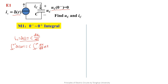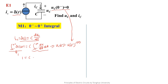We eliminate dt here, and this part becomes uc(0+) minus uc(0−). We've known this is a zero-state, so this part is zero. According to the previous discussion, we've known this integral is one. So we know: 1 = C times uc(0+), and therefore uc(0+) equals 1/C.